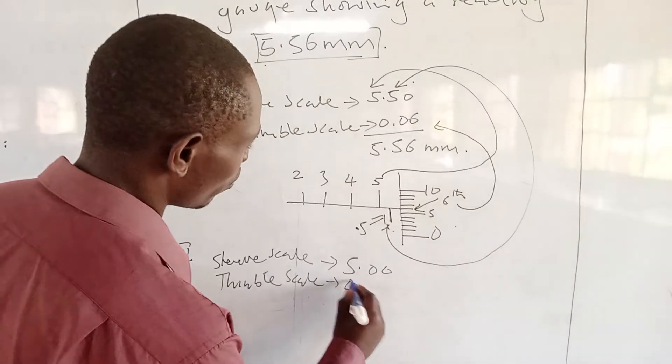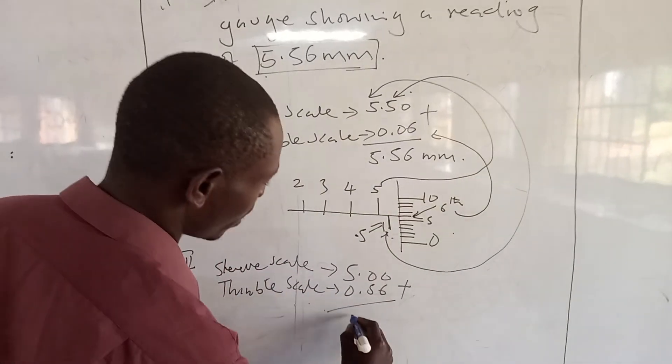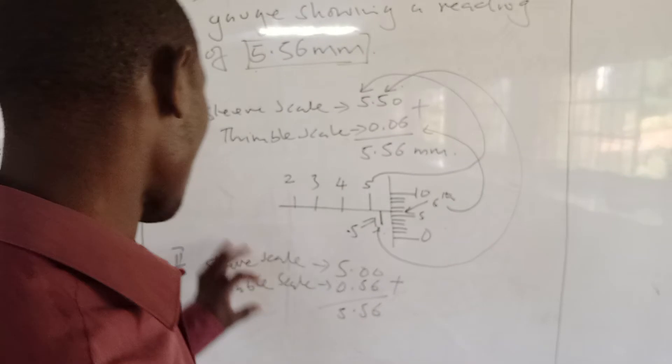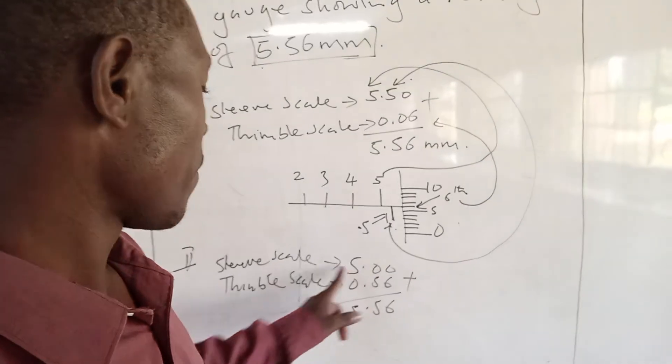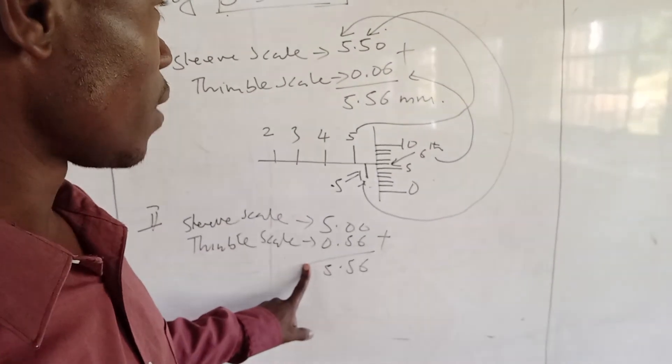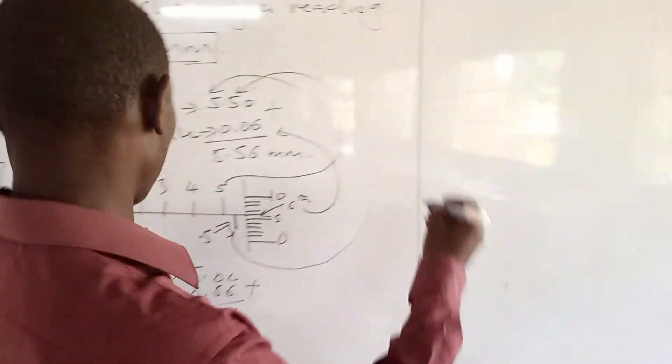Which if we add we will get 5.56. So we draw a sleeve scale showing a reading of 5.00 and then a thimble scale showing 0.56.